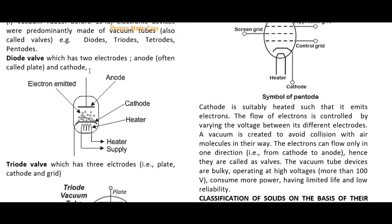If the plate (anode) is positive, electrons will flow. If the anode is negative and the cathode is positive, there is no flow of electrons — as indicated by the cross symbol on the diagram.